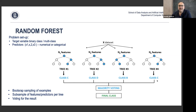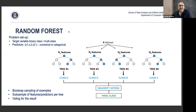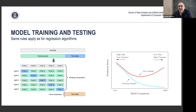Then you do majority voting — you look for the agreement among the trees. If two out of four trees said class C, the random forest outputs class C. You can also estimate the probability: two out of four trees agreed on class C, so it's 50% probability class C, 25% class D, and 25% class B. This majority voting is the most stable preferred method.